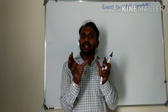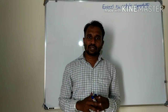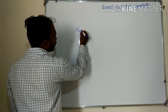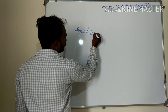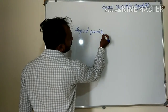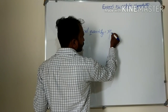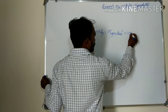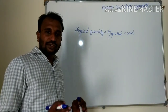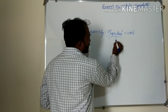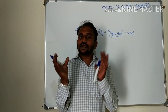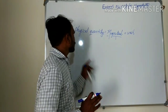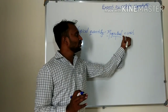Next, how to measure these physical quantities. A physical quantity is generally represented by one formula: Physical quantity is equal to magnitude into unit. Magnitude means a numerical value, otherwise we consider it a number.